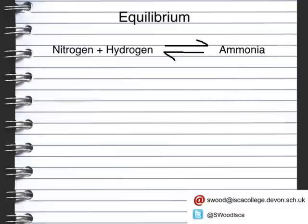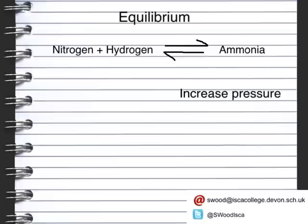As we've talked about when we did the production of ammonia, we need the right conditions to make it. This means we need the right temperature and the right pressure in order to get the most yield of ammonia. If we increase pressure, it will favour the production of ammonia. Whereas if we increase temperature, it will favour the breakdown of ammonia and the production of hydrogen and nitrogen.